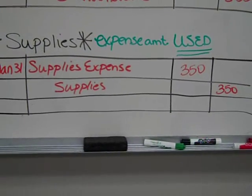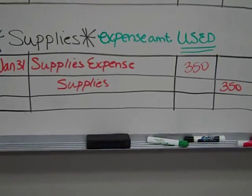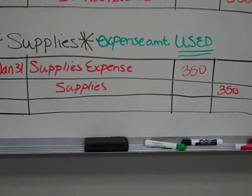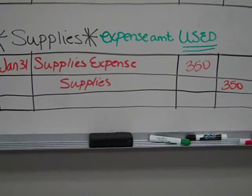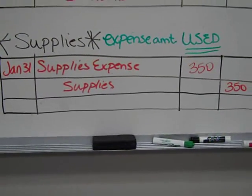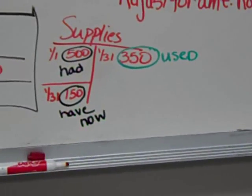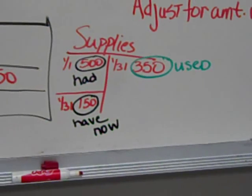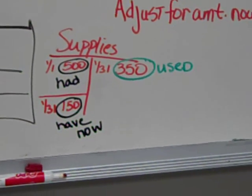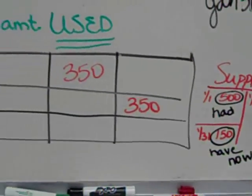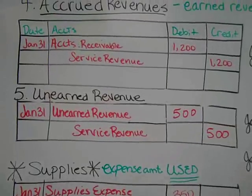You really have to read the transaction carefully. It may give you the amount used directly. If it doesn't, it may tell you the amount of supplies still on hand, and you have to use a T-account to calculate the amount of supplies used so you know what to put in the entry. That concludes our types of adjusting entries. If you have any questions, let me know.